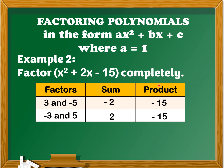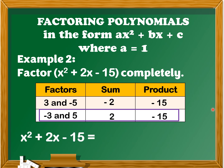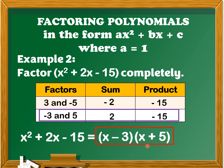Looking at the given polynomial, the constant term is negative 15 and the coefficient of the middle term is positive 2. The first sum is negative 2 and the second sum is positive 2, so we consider negative 3 and positive 5 as the factors of negative 15. Therefore, x squared plus 2x minus 15 is equal to the quantity of x minus 3 times the quantity of x plus 5.